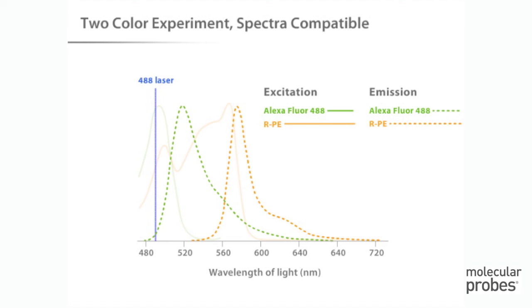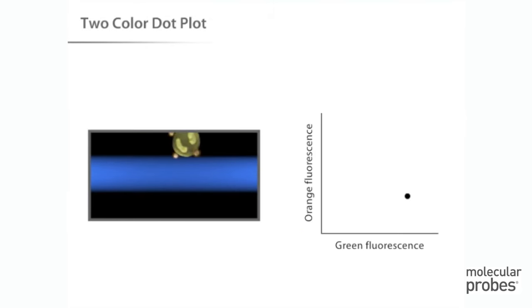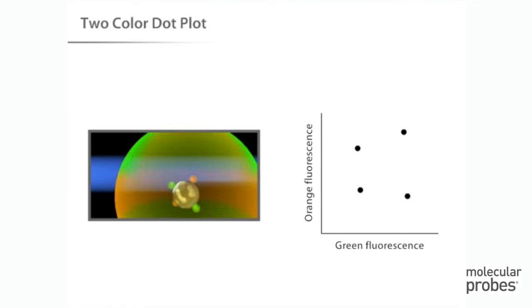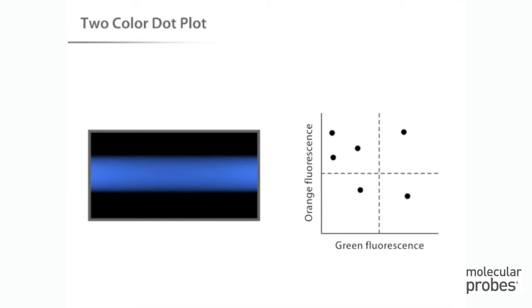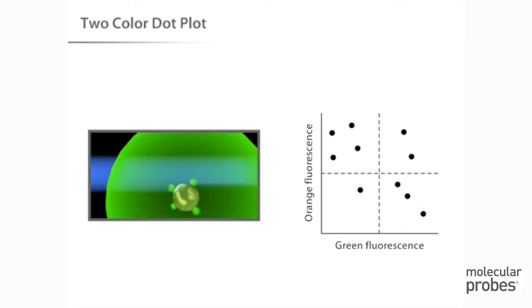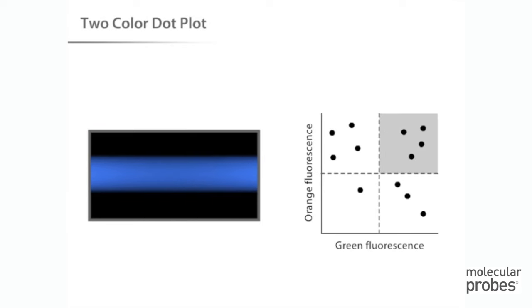Compatible dyes, such as these, allow scientists to easily detect two colors from a single laser. If we analyze data from the two-color experiment using a scatter plot, four distinct populations emerge. Looking at the dot plot, in terms of quadrants, cells with only bright orange fluorescence appear in the upper left quadrant. Cells with only green fluorescence appear in the lower right quadrant. Cells with both bright green and bright orange fluorescence appear in the upper right quadrant. And finally, cells with both low green and low orange fluorescence appear in the lower left quadrant.